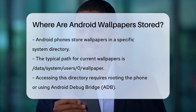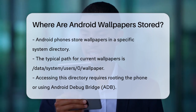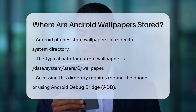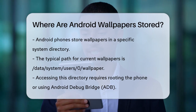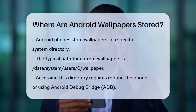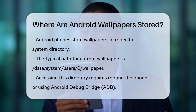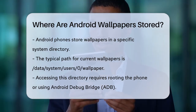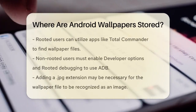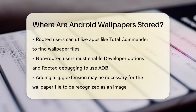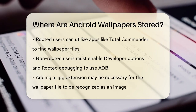First, let's talk about the general location. On most Android devices, the current wallpaper is stored in a system directory that's not easily accessible without some technical know-how. The path to this file is usually /data/system/user/0/wallpaper. However, to access this directory, your phone needs to be rooted, or you need to use Android Debug Bridge (ADB) with root access enabled.